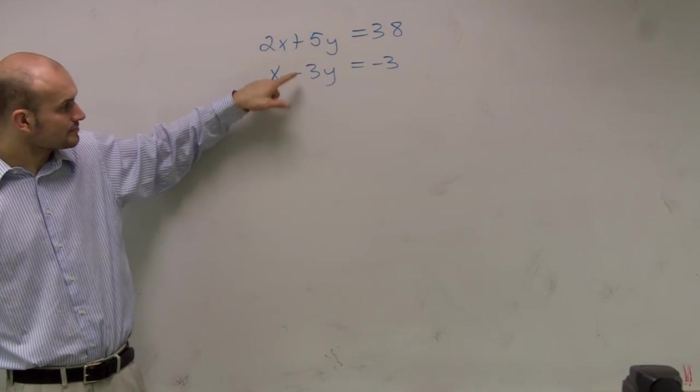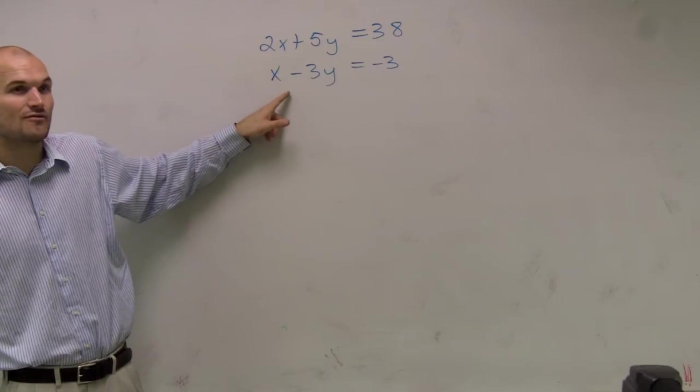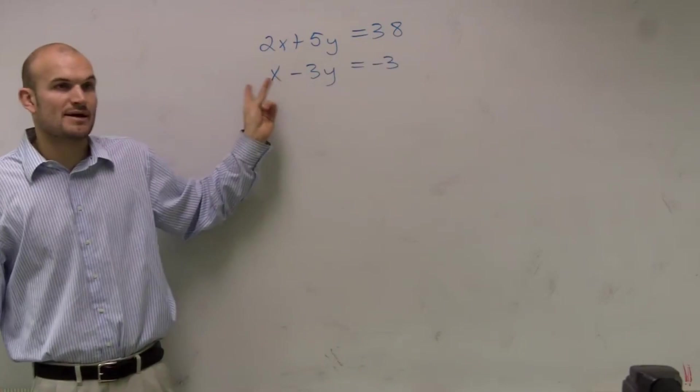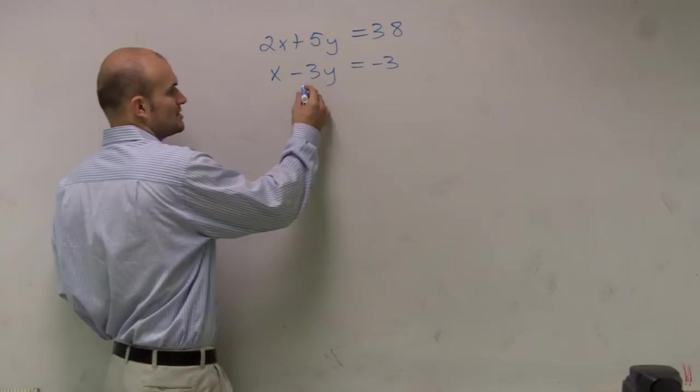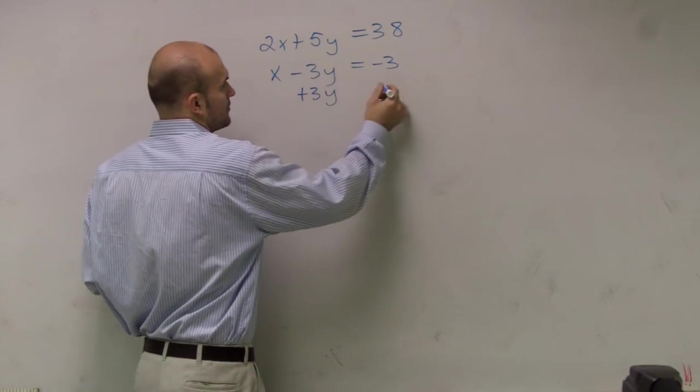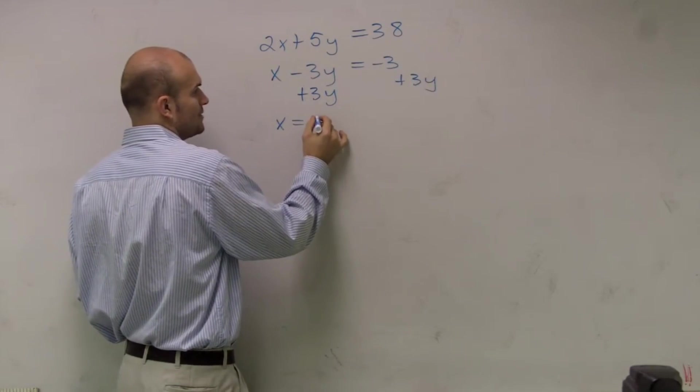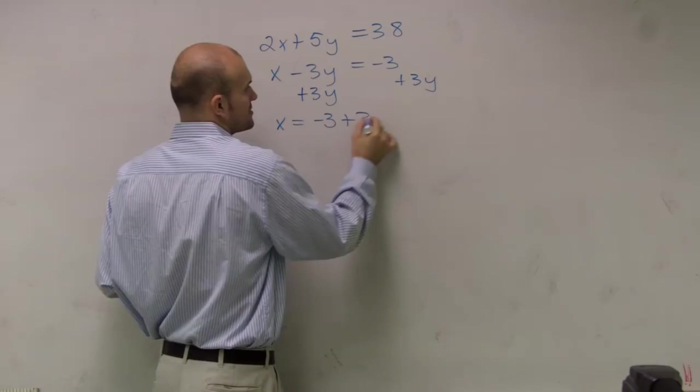However, if I look at this equation, it's really easy for me to solve for x. All I have to do is add the 3y to the other side, since 1 is my coefficient for x. So that's what I'm going to do. Let's just add the 3y to the other side. Therefore, I'm left with x equals negative 3 plus 3y.